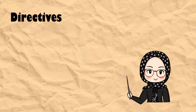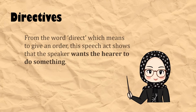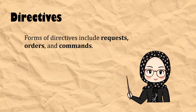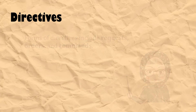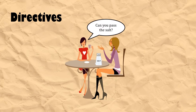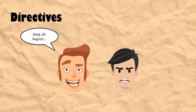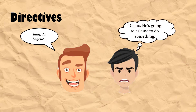The fourth classification is directives. From the word 'direct,' which means to give an order, this speech act shows that the speaker wants the hearer to do something. Directives include requests, orders, and commands. The question 'Can you pass the salt?' uttered to someone at a dining table with a bottle of salt nearby is a request for that person to give the salt to the speaker. The Sundanese phrase 'dabager' also belongs to this directive speech act — every Sundanese must be aware that the person who says the phrase is going to ask them to do something.